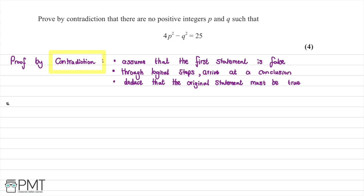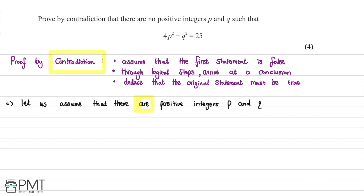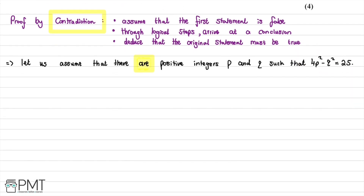So what are we going to say here? We're going to say: assume that there ARE positive integers P and Q. I'm going to highlight the word 'are' because this is key — this is what changes from the original statement 'there are no positive integers' to 'there are positive integers P and Q such that 4P squared minus Q squared is equal to 25.'